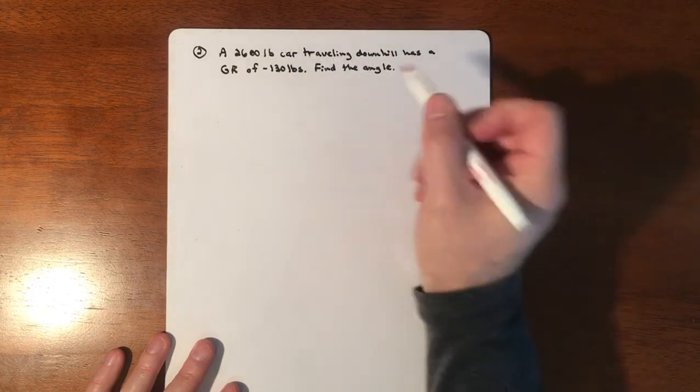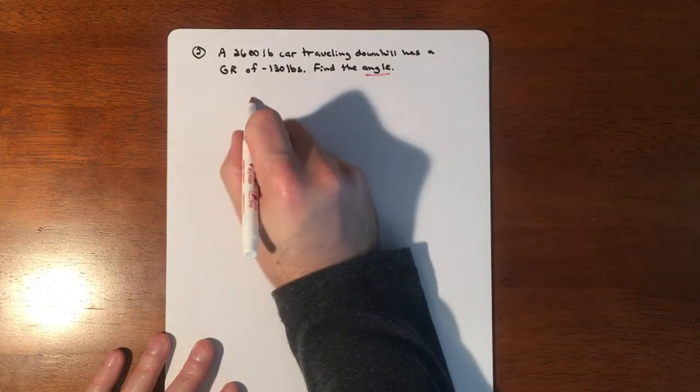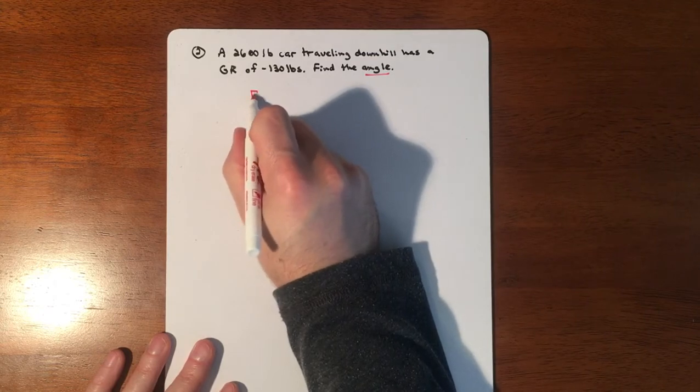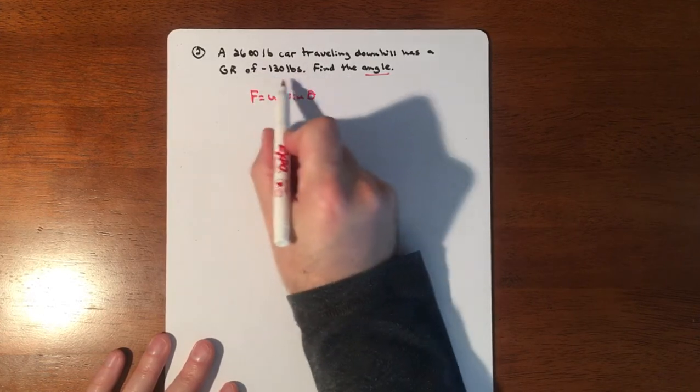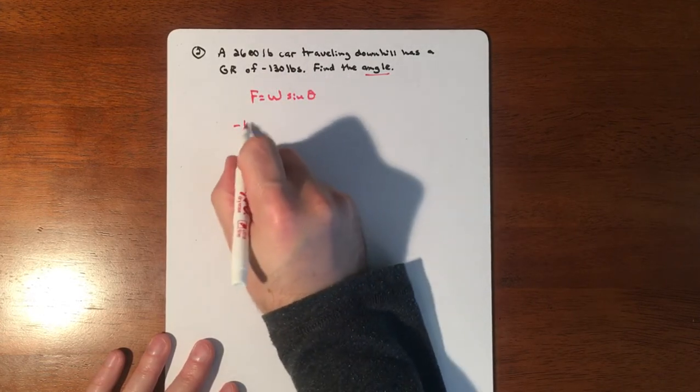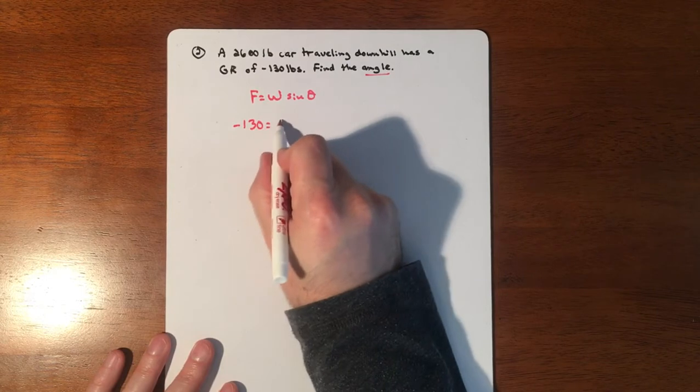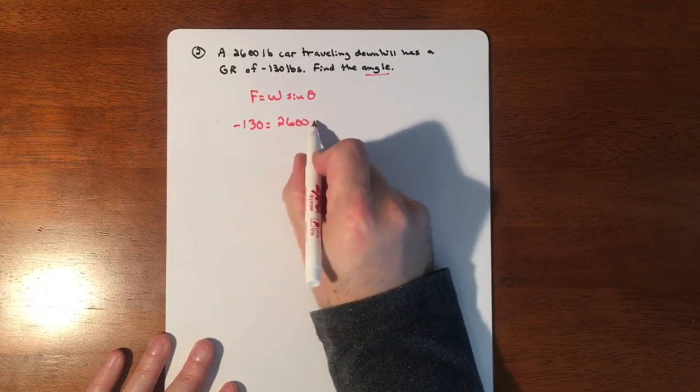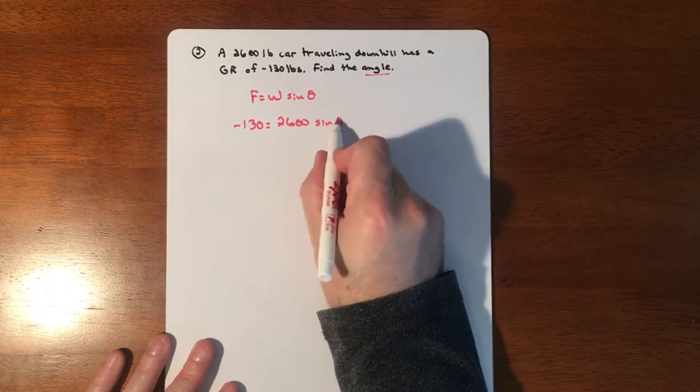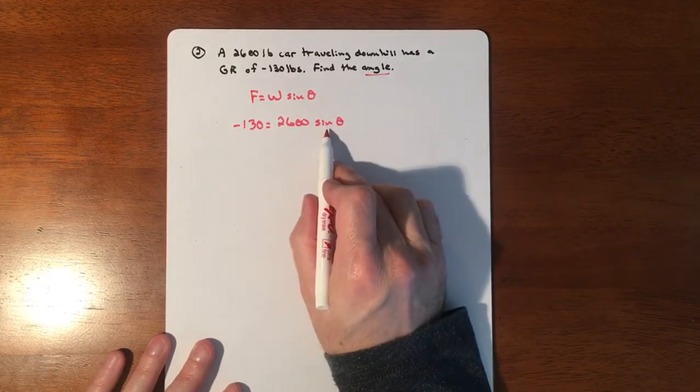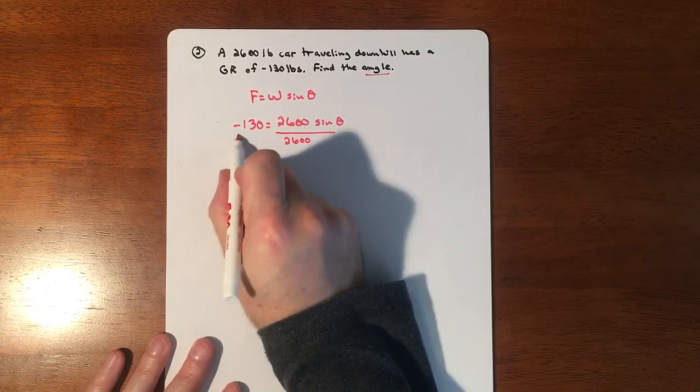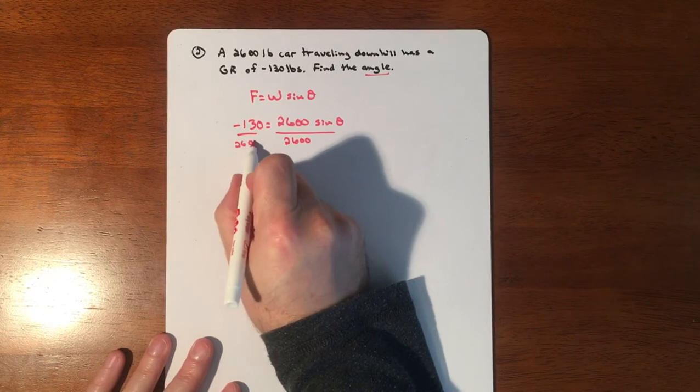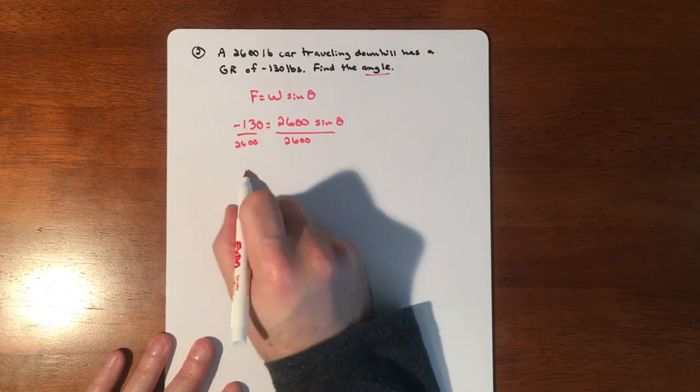This time we're missing the angle. For our formula F = W sin(θ), our force is negative 130, our weight of our vehicle is 2600 pounds, and we don't know theta. Eventually, we're going to do the inverse sine to solve this, but we'll start by dividing by 2600. If you divide this out, you'll get negative 0.05 equals sine of theta.